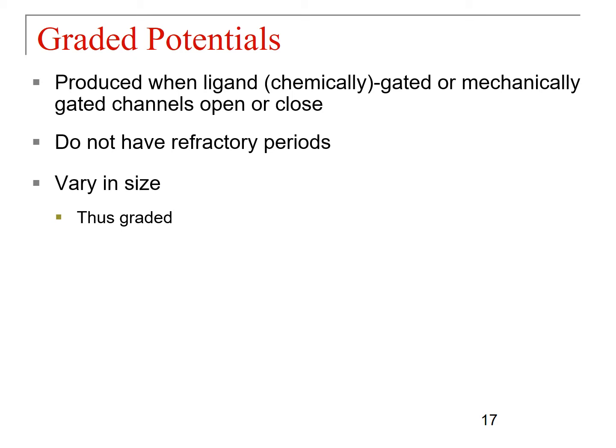Here's a scenario: if just one ligand opens one ligand-gated channel, sodium comes in through that one channel but won't cause a sharp movement of membrane potential towards threshold. With five ligand-gated channels open at the same time, you get a greater depolarizing stimulus, moving you further up towards threshold. The reason these vary in size is because with a small amount of ligand present you have just a few channels open, and with a large amount of ligand you have a much larger number open. The size of your graded potential depends on the number of ion channels open at a given time.